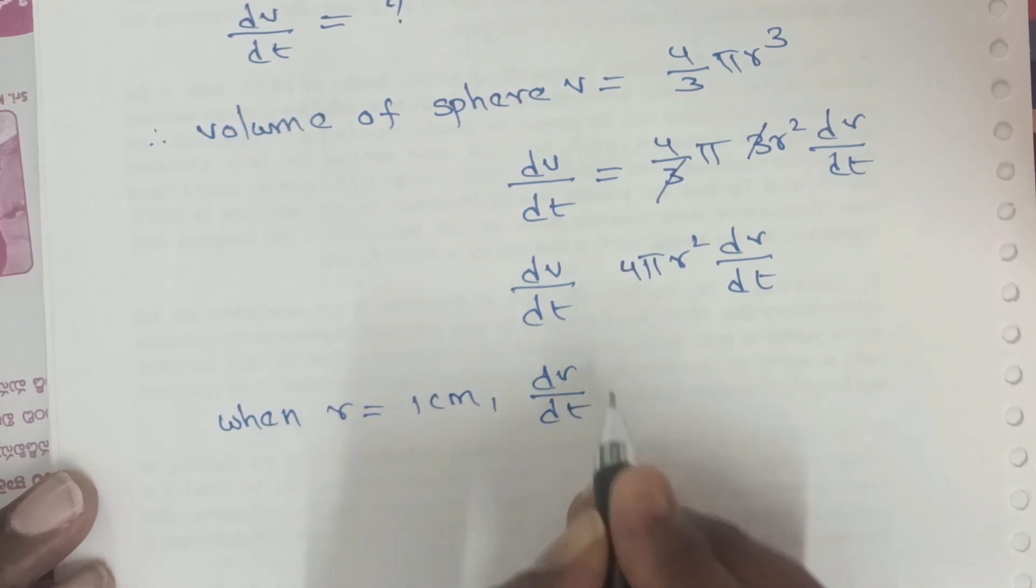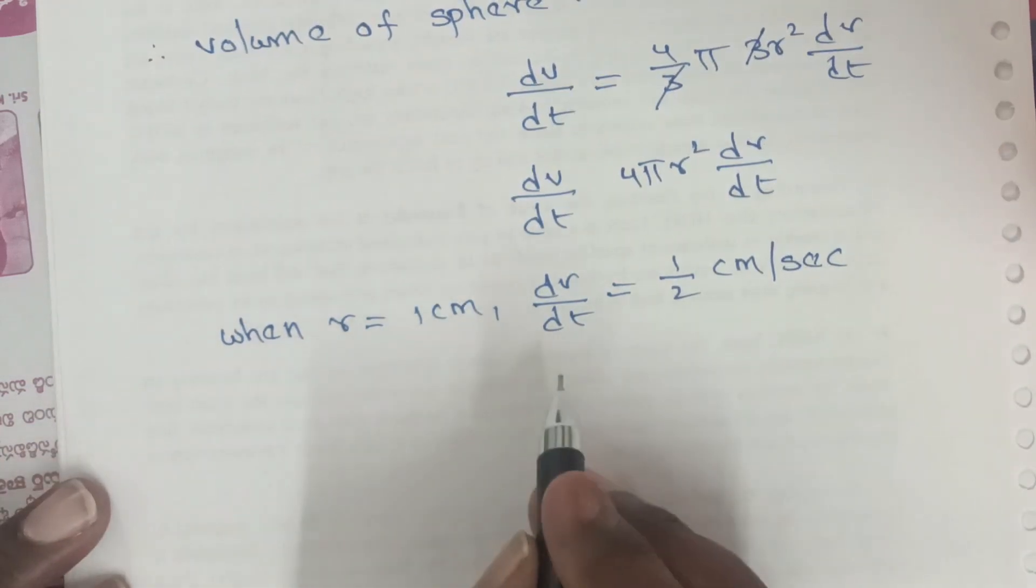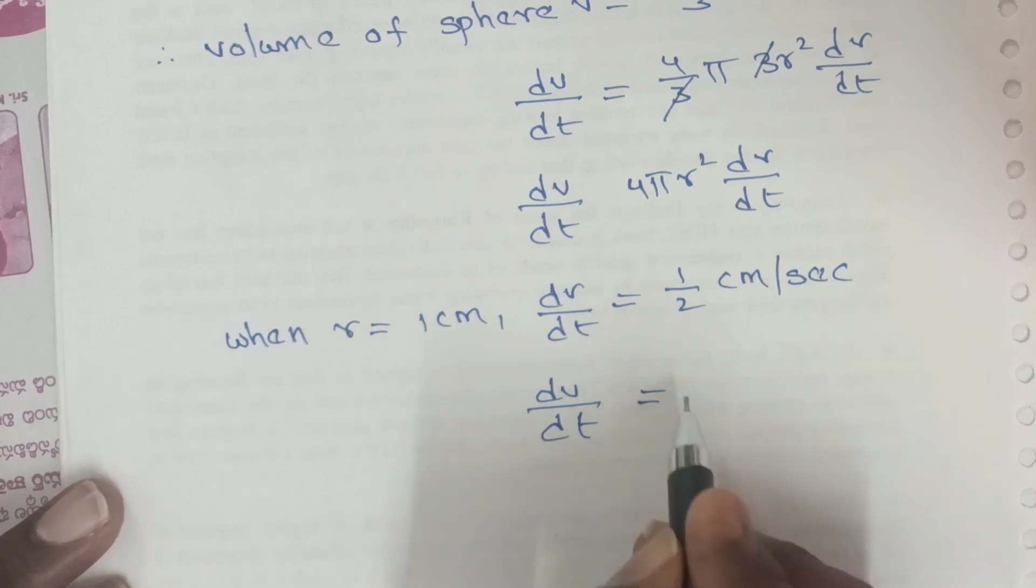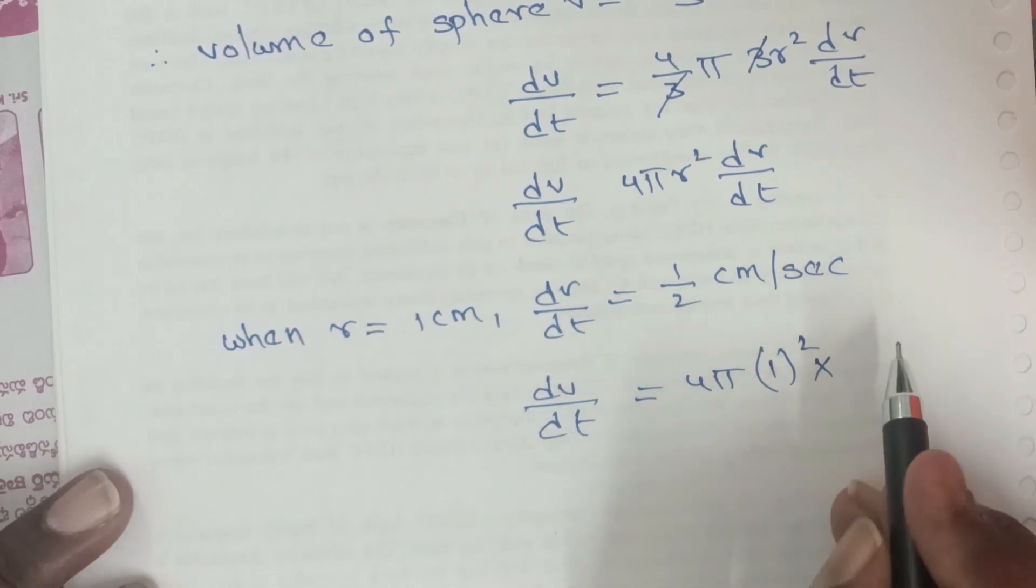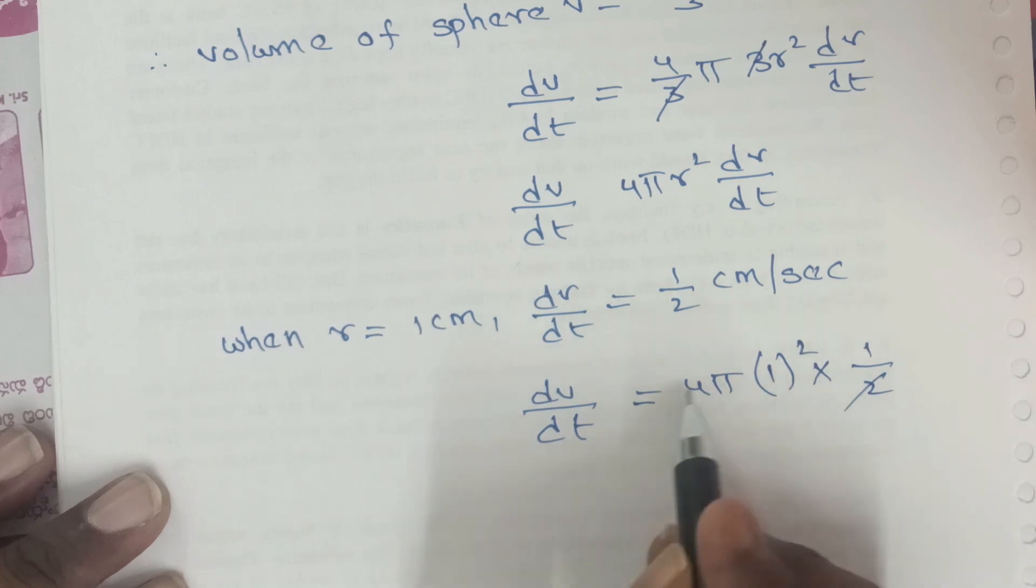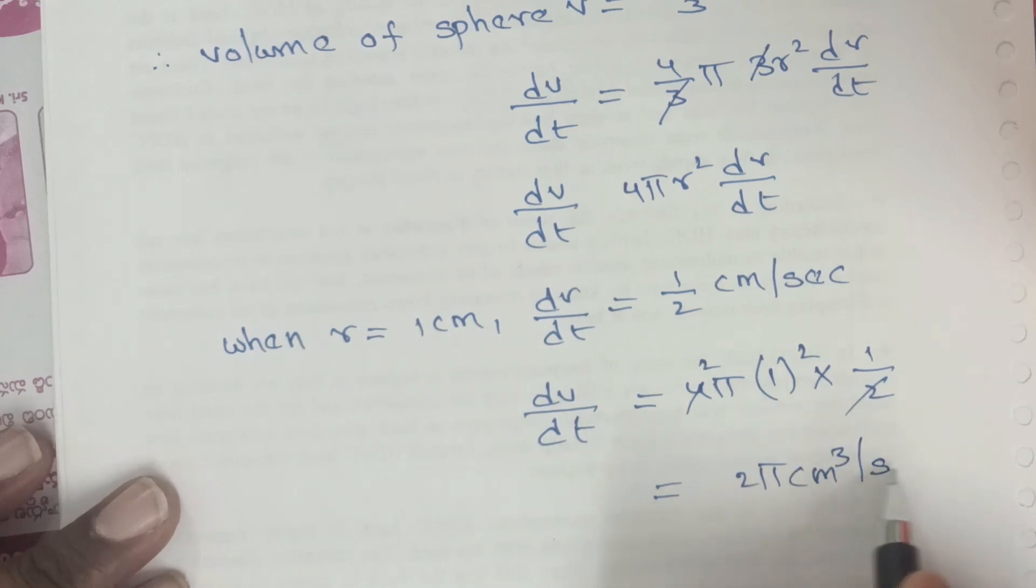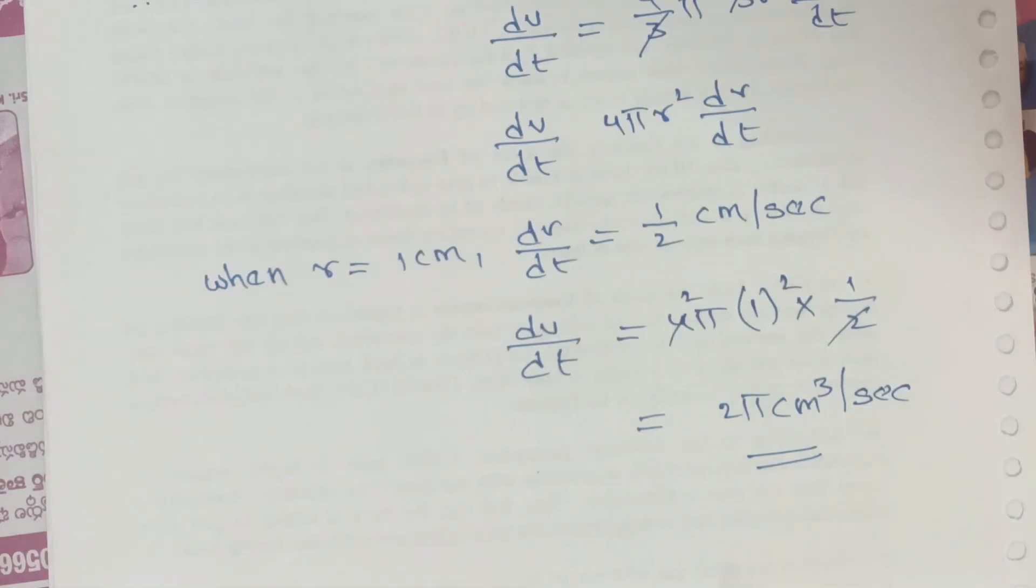When r equals 1 cm, dv/dt equals 4π times 1 squared times 1/2, which equals 2π centimeter cube per second. So the rate of change of volume is 2π centimeter cube per second. Thank you.